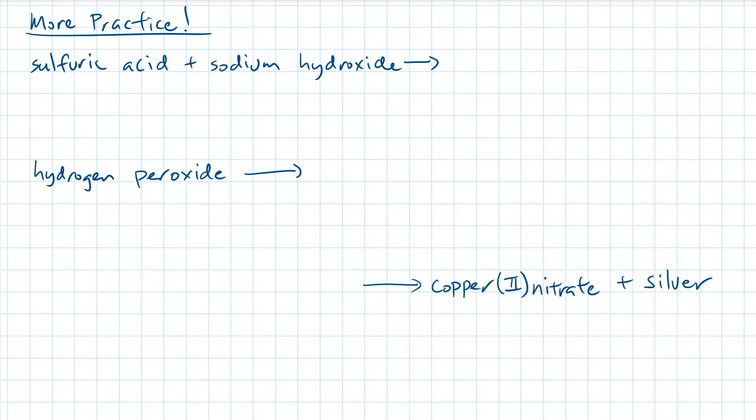Practice is the best way to master predicting and balancing chemical reactions. Pause the video and copy down the following examples. When you're ready, we'll take up the examples together.